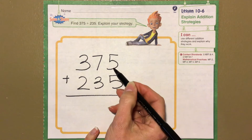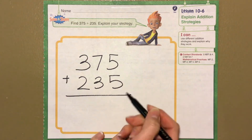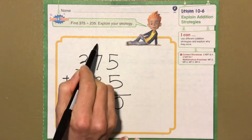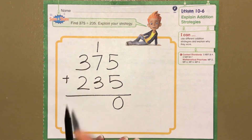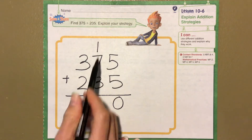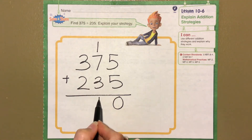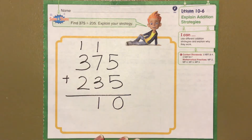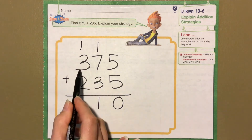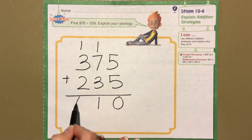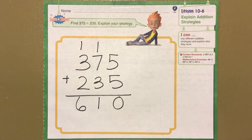Starting with the ones: 5 plus 5 is 10. Put a 0 in the ones place and regroup that one bundle. 7 plus 3 is 10, plus one more is 11. Put the 1 here and regroup that other one. 2 plus 3 is 5, plus one more is 6. That gives a sum of 610.